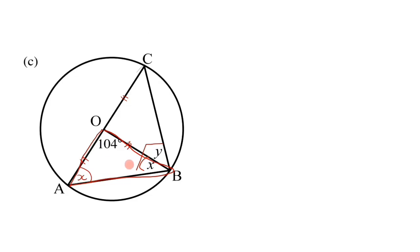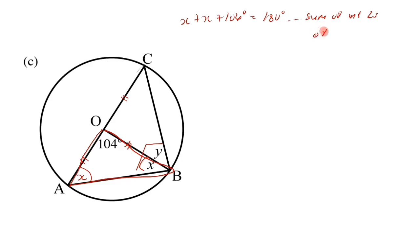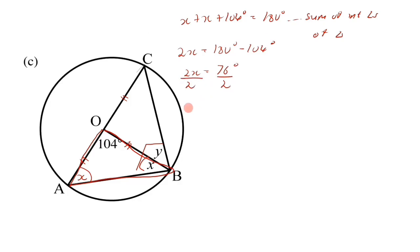To find x, we use the sum of interior angles of the triangle: x plus x plus 104 degrees equals 180 degrees, reason 'sum of interior angles of a triangle'. So 2x equals 180 minus 104, which gives 2x equals 76 degrees. Dividing both sides by 2, x equals 38 degrees.